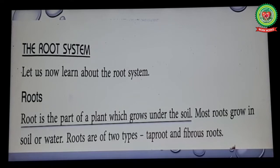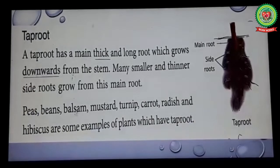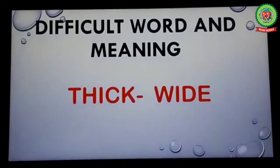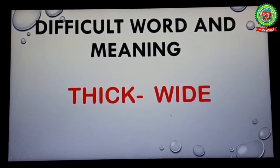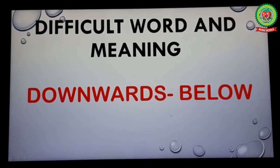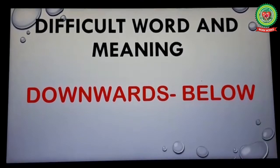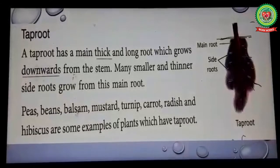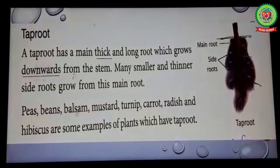Roots are of two types: taproot and fibrous root. Next paragraph — taproot. A taproot has a main thick and long root which grows downward from the stem. Underline the word 'thick' and write its meaning: wide. Underline the word 'downwards' and write its meaning: below. Many smaller and thinner side roots grow from this main root.